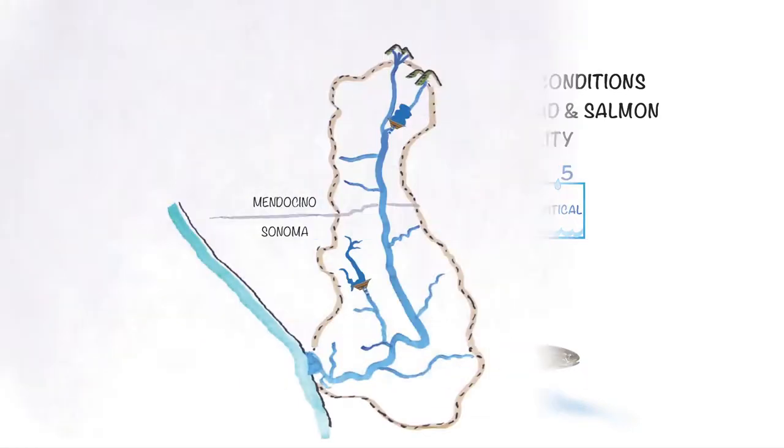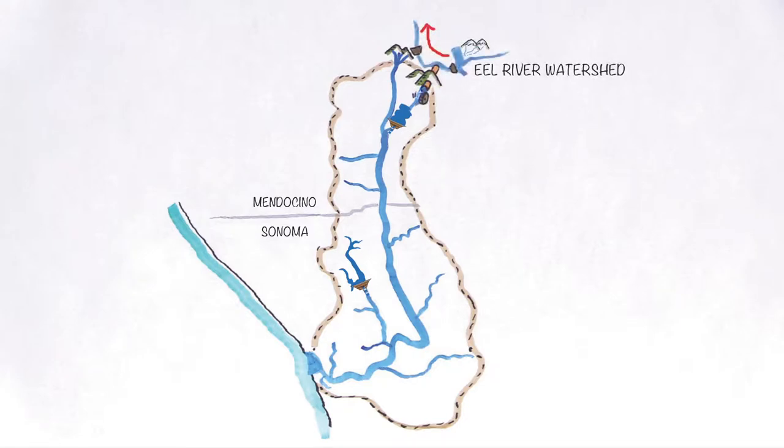The existing hydrologic index limits changes to flow requirements to a few months of the year based on conditions outside the Russian River watershed.